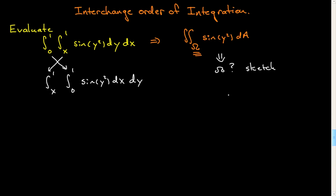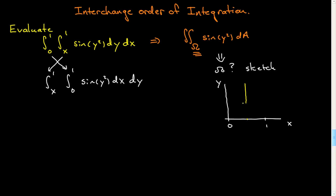So I'll build some coordinate axes, x and y as usual. The x integral is on the outside, so x goes between 0 and 1. For each x, y goes between x and 1. So for any x here, y is going to go from there up to 1. Drawing this, the lower bound is y equal to x, and the upper bound is y equal to 1. That then is omega.